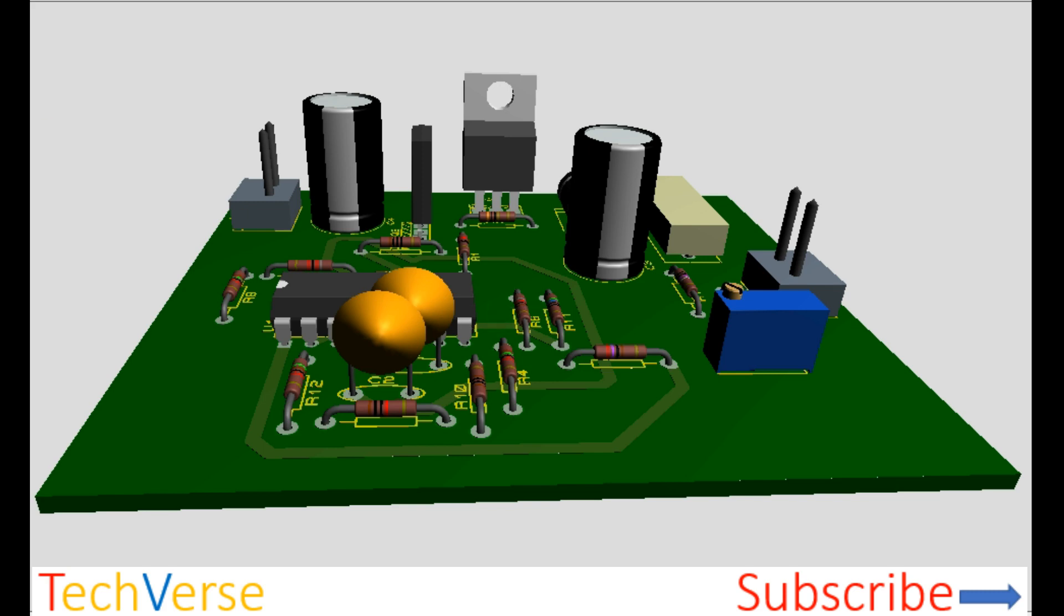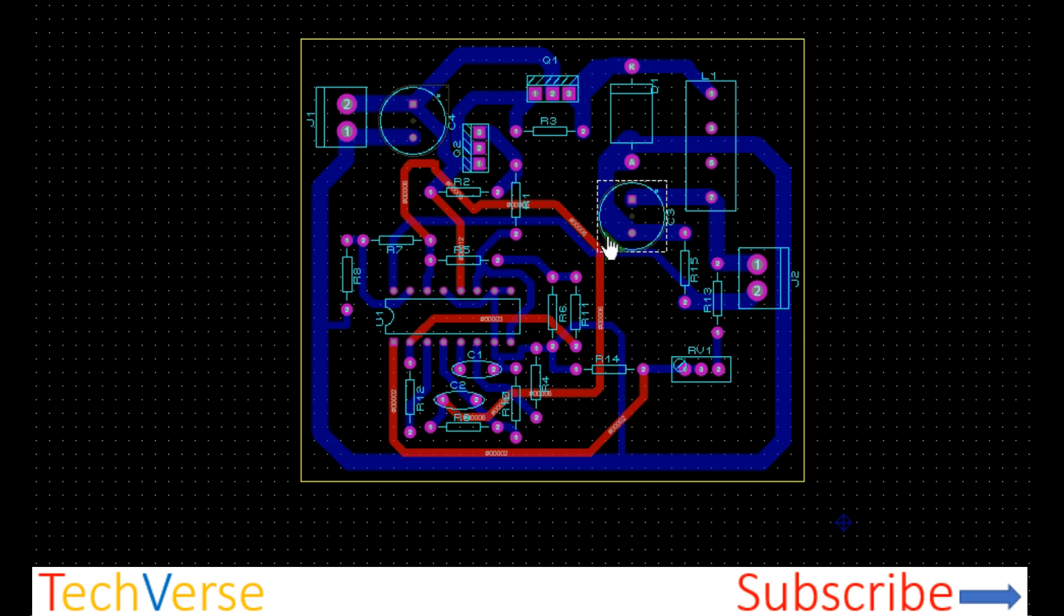The schematics are shown. This is the PCB. All the blue tracks are the bottom copper and the red tracks are the top copper or basically just jumpers.